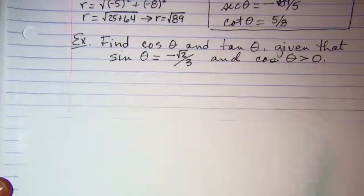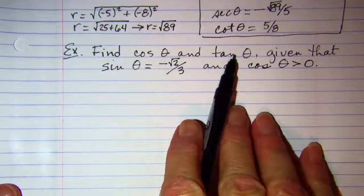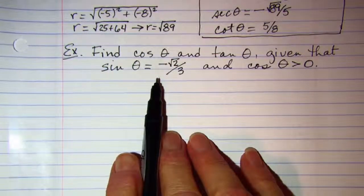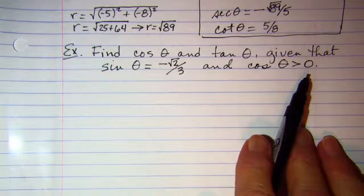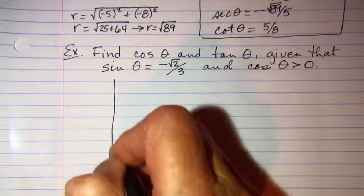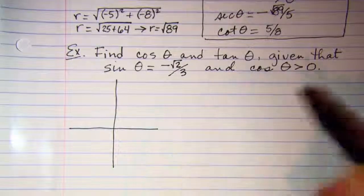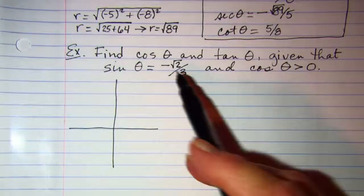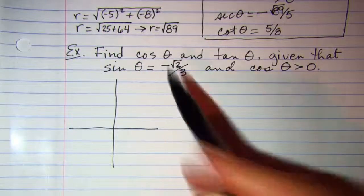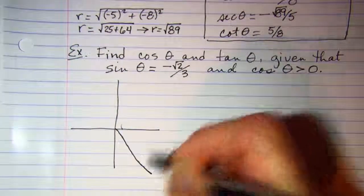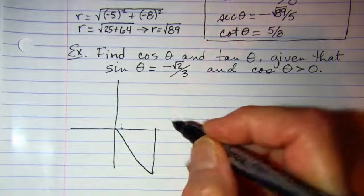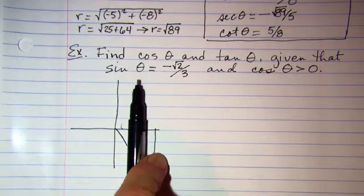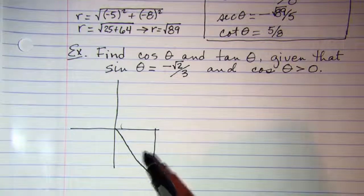And then another problem. Find the cosine theta and the tangent theta given that sine theta is negative root 2 over 3 and cosine theta is positive. Let's draw a sketch. Cosine is positive in the two right-hand quadrants, and then my sine theta is negative here. So my reference triangle is going to be in quadrant 4. Cosine is positive on the right side, and then sine out of those two quadrants is negative down here.